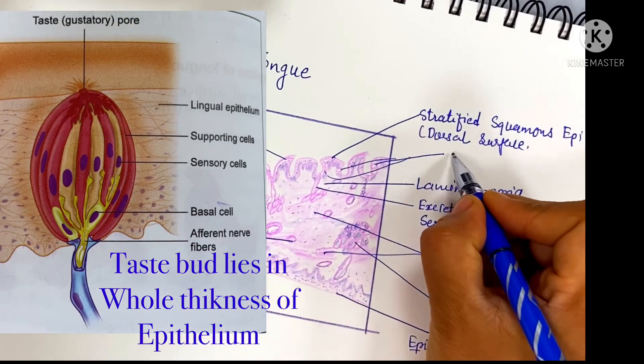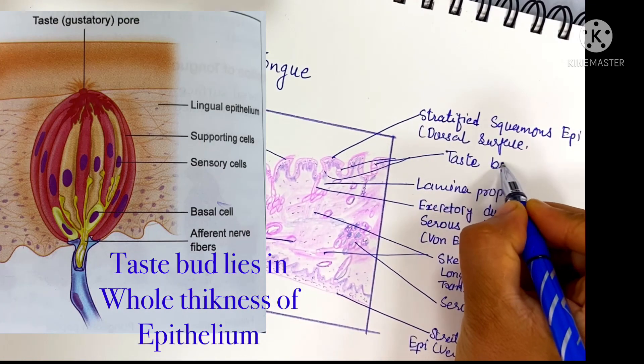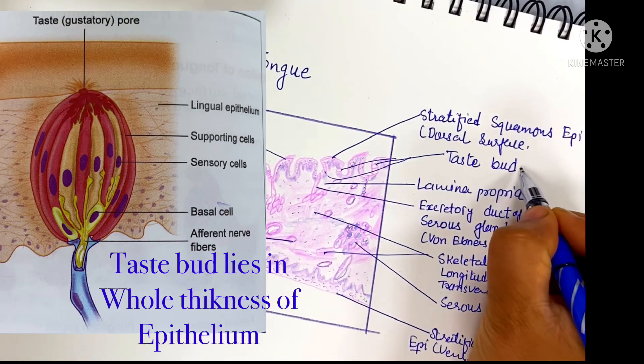Taste buds are present in the circumvallate and fungiform papillae.